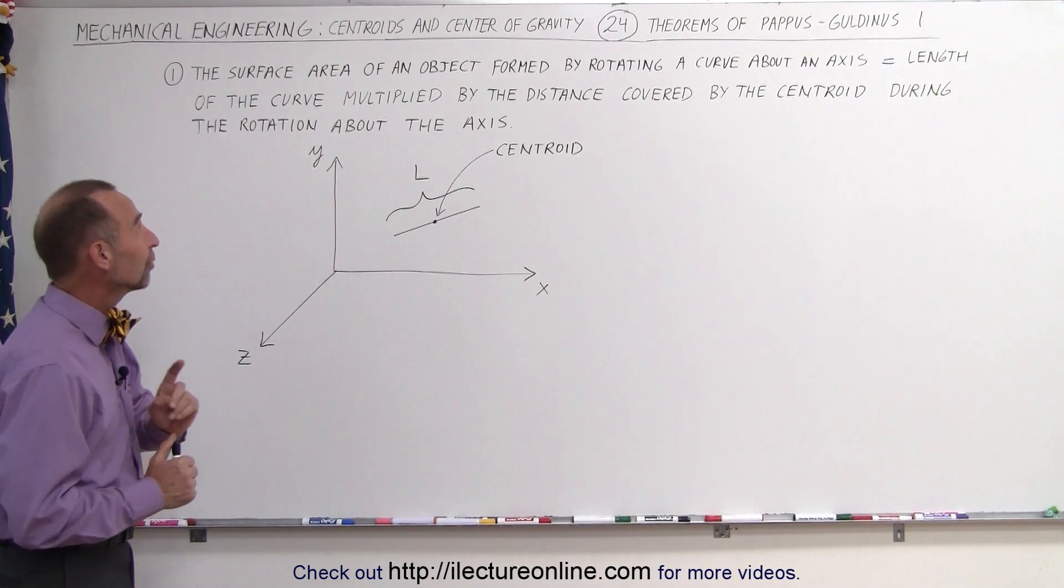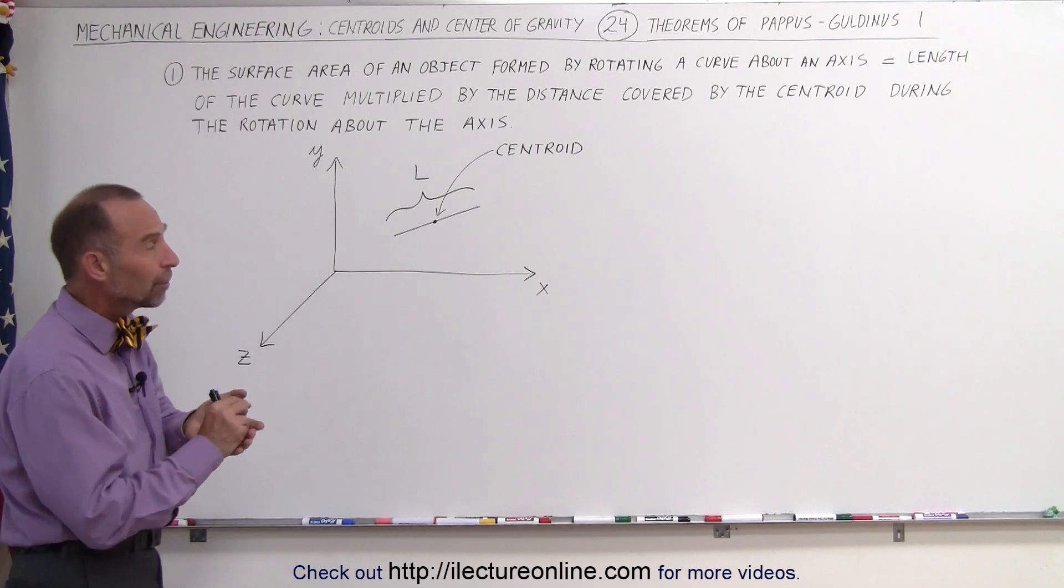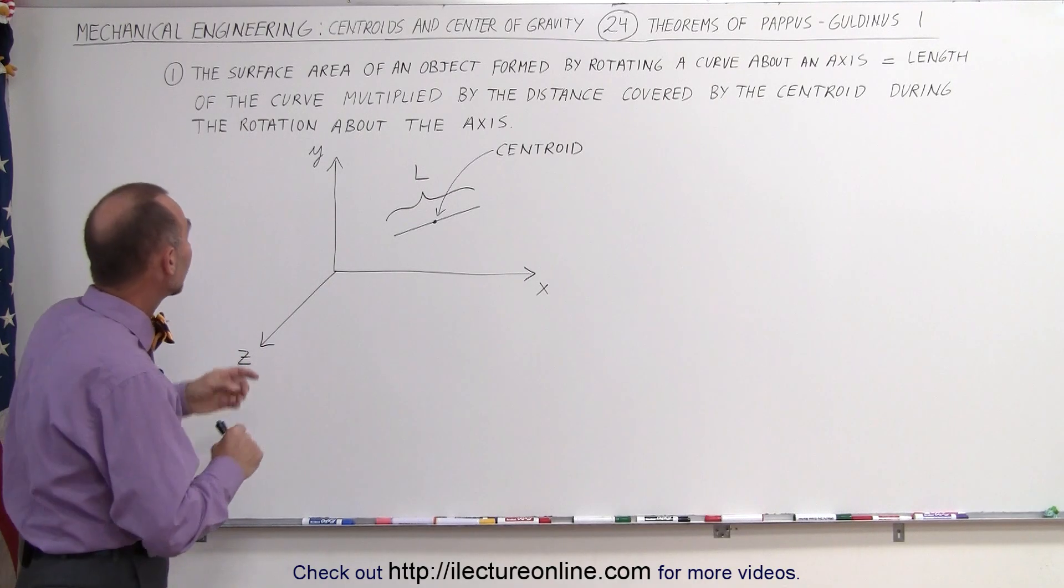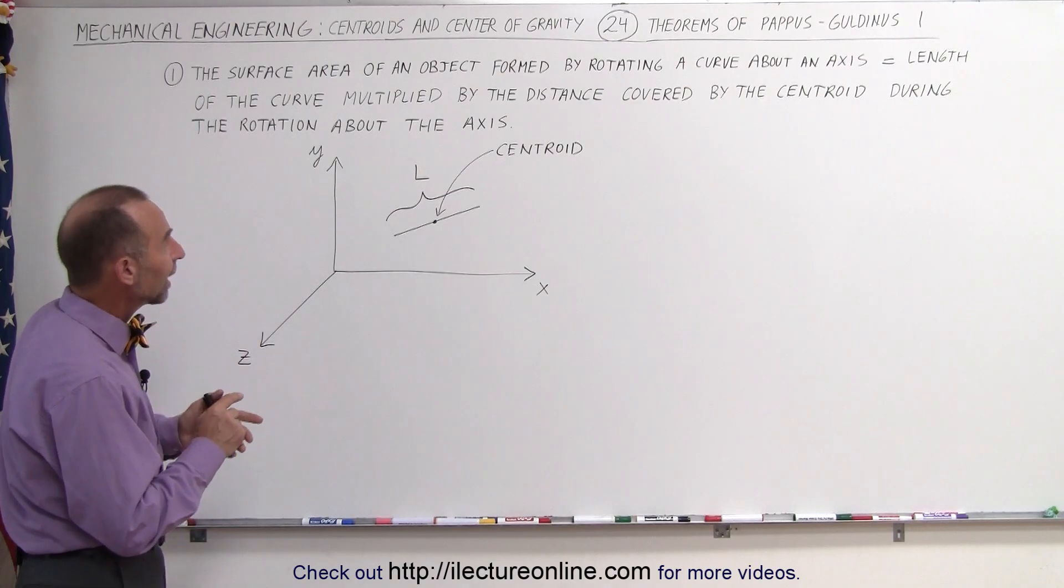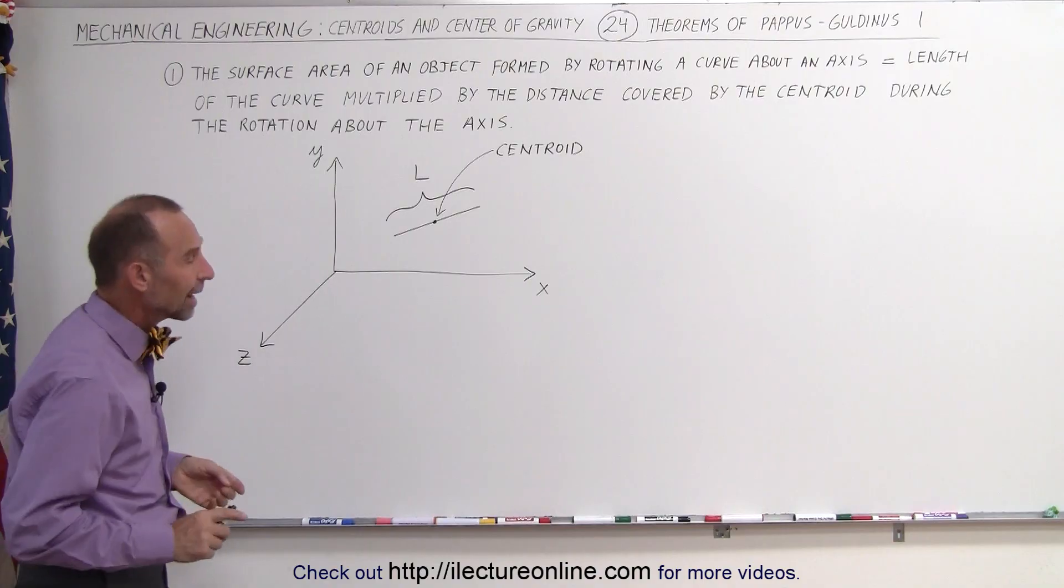Here's the first theorem. The first theorem says that the surface area of an object that is formed by rotating a curve about an axis is equal to the length of the curve multiplied by the distance covered by the centroid during the rotation about the axis.